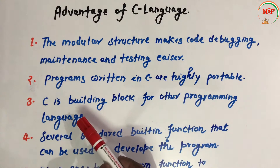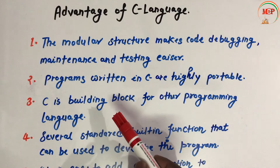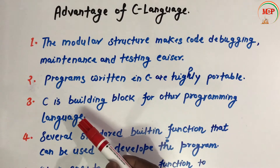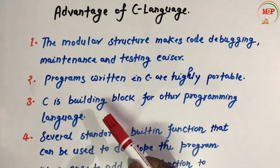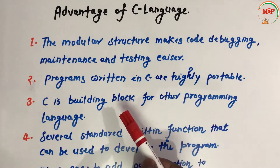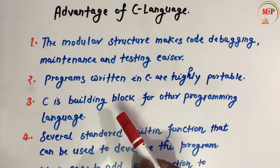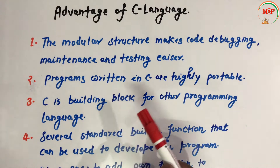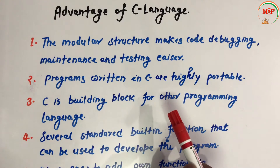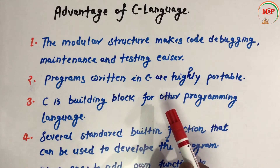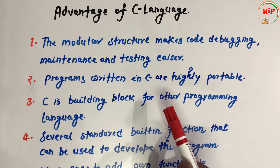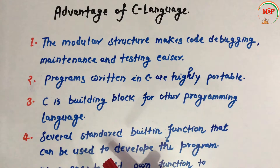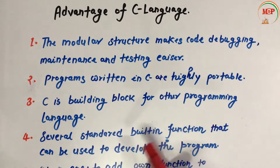The third point is that C is a building block for other programming languages. The C language acts as a building block for other programming languages — code written in C can be imported into other programming languages.